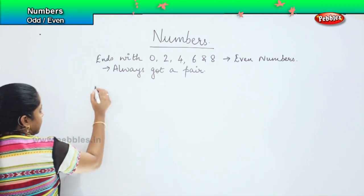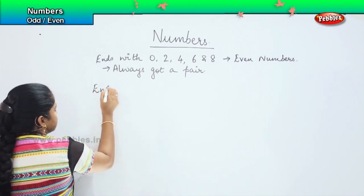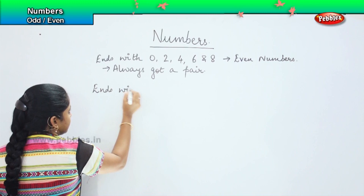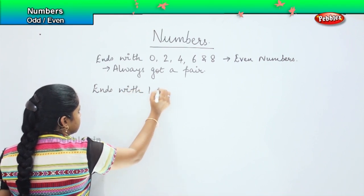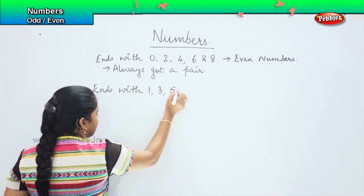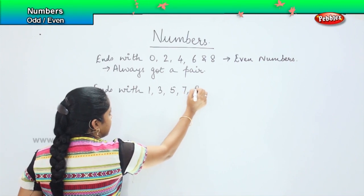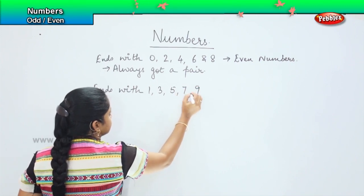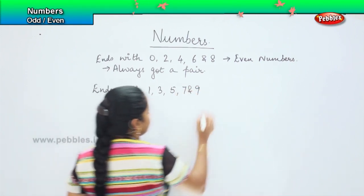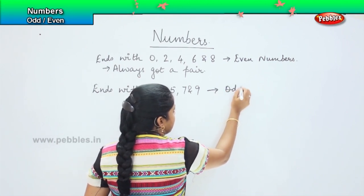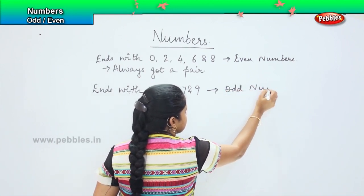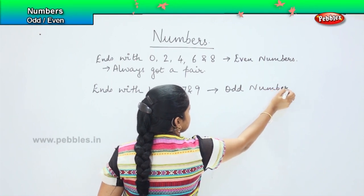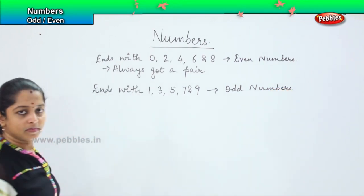Similarly, the numbers which end with 1, 3, 5, 7, and 9, they are called odd numbers.